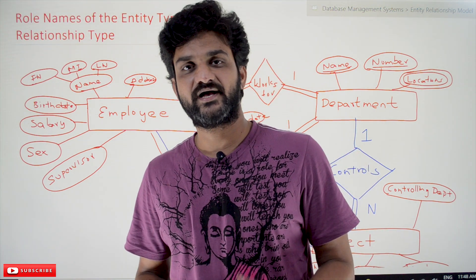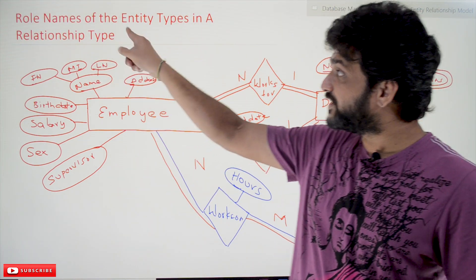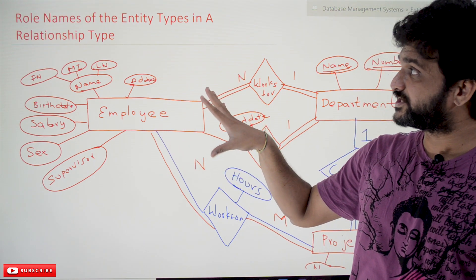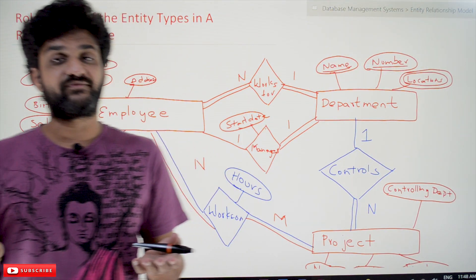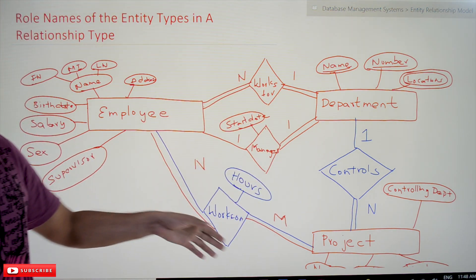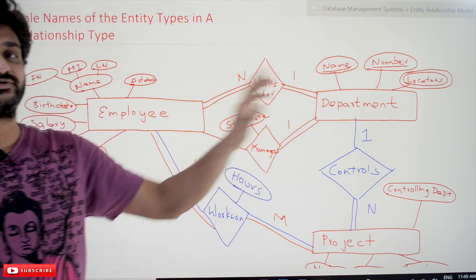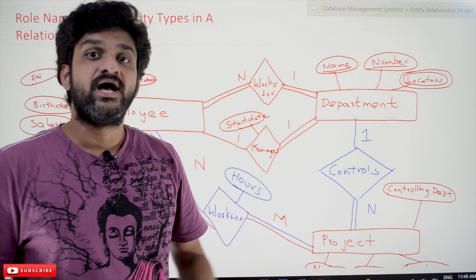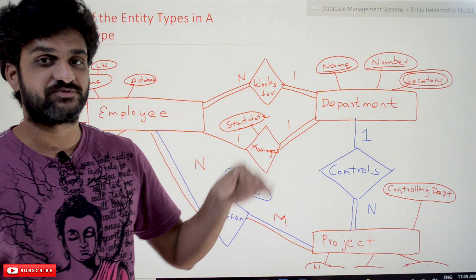Hi, welcome to Learning Monkey. I am Vikram. In this class, we try to understand role names of an entity type in a relationship type. The relationship types we will discuss have already been covered in our previous videos. If you haven't watched those videos, please watch them first. Every video in our channel is part of a course or playlist, and our suggestion is to follow the entire course for better understanding. The link for the playlist is provided in the description below.